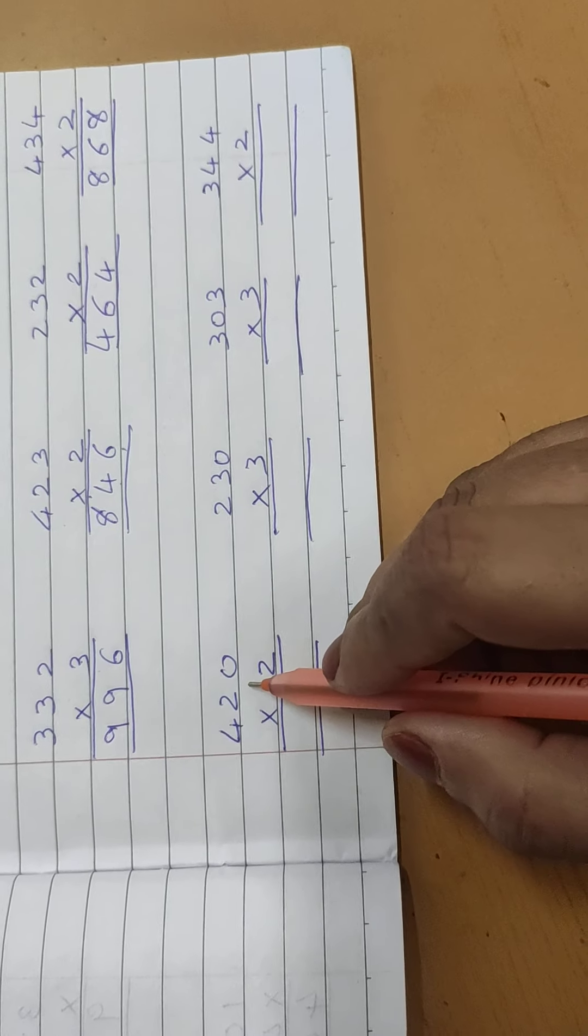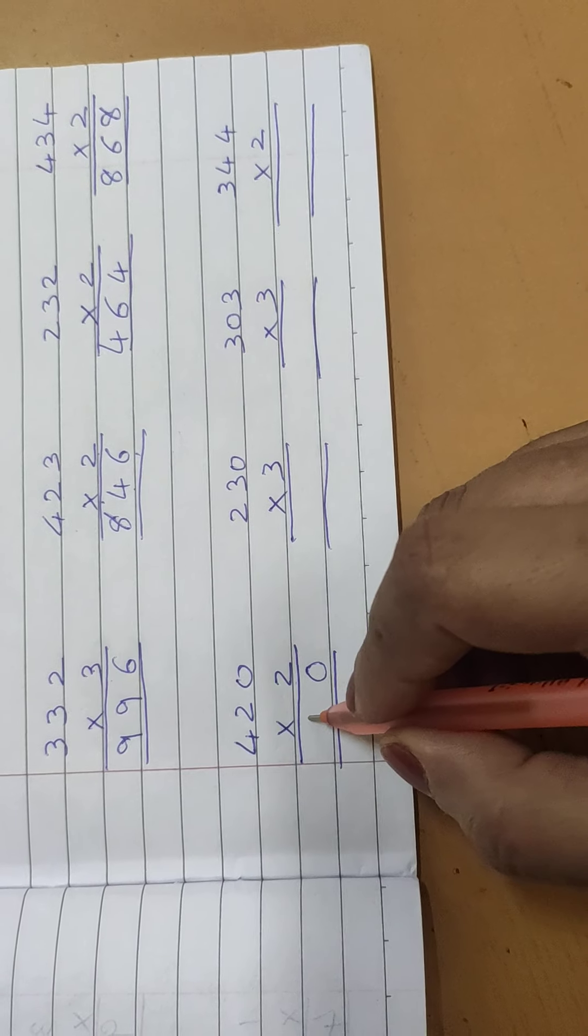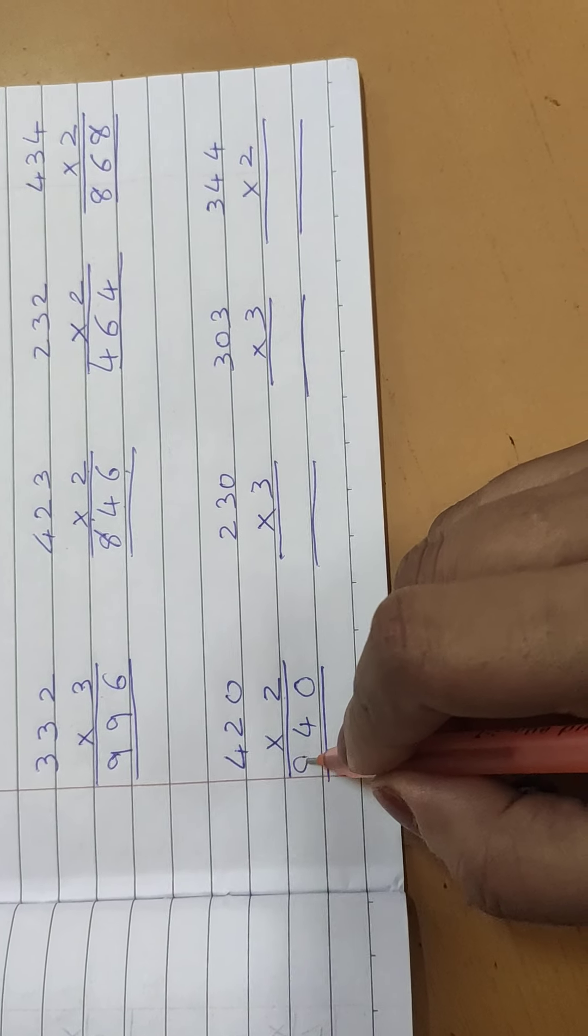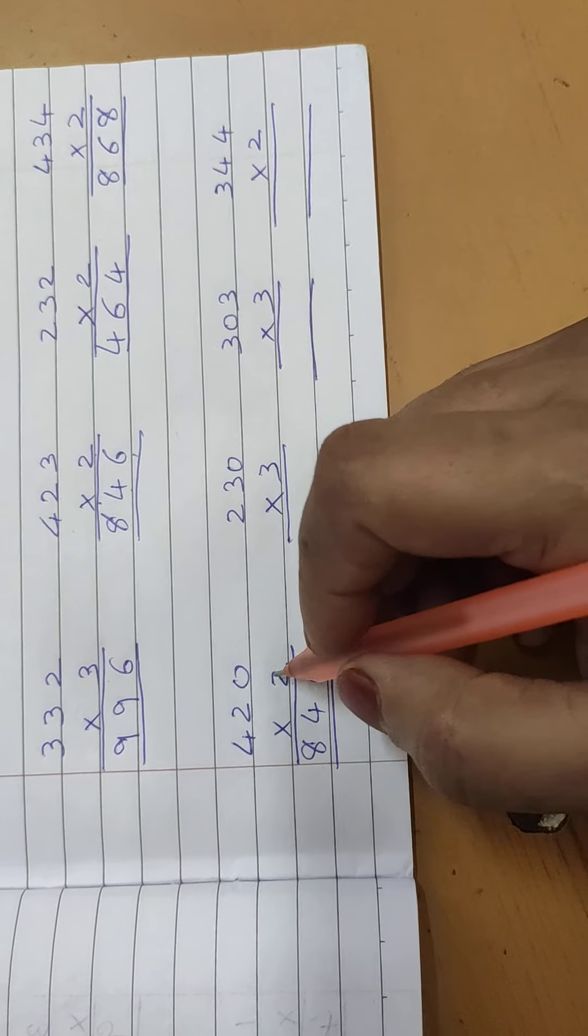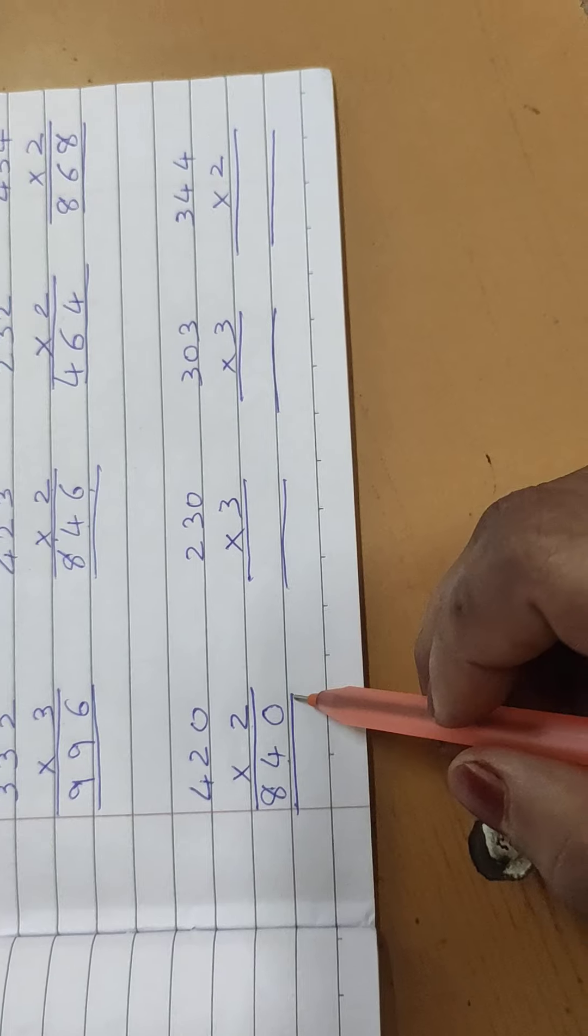Now look here, 420 multiply by 2. 2 zeros are 0, 2 twos are 4, 2 fours are 8. But as when we multiply a number with 0, the answer will be 0, same here.